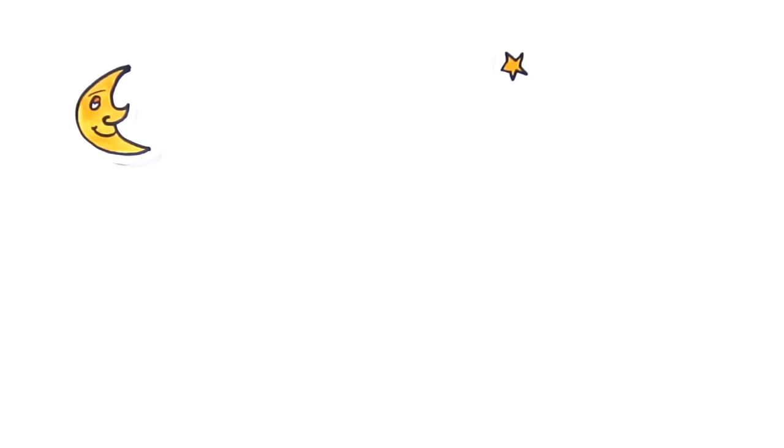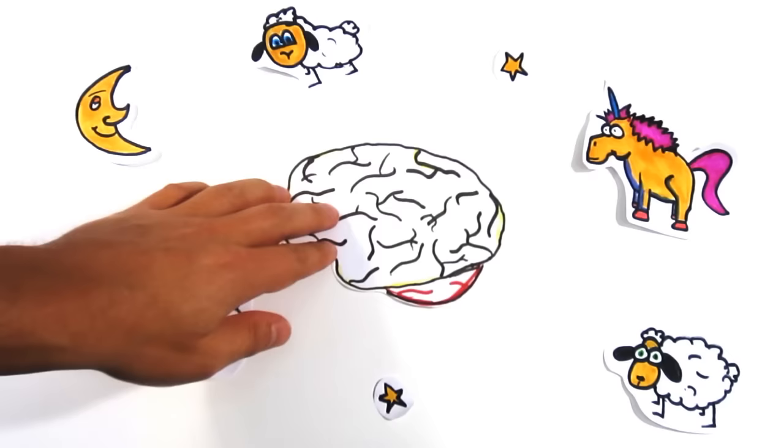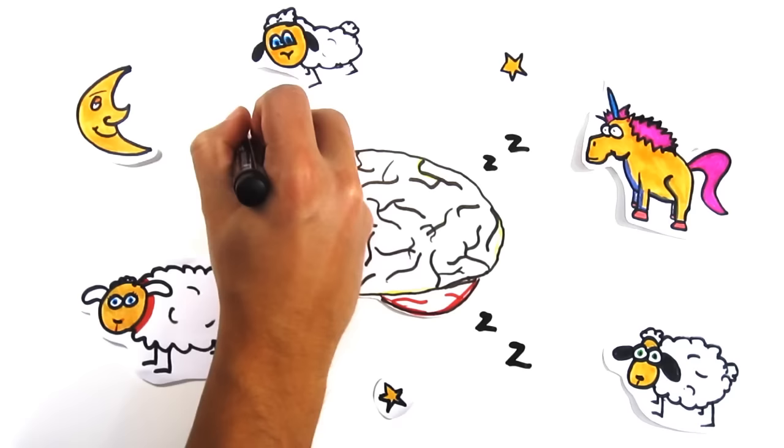After all, dreaming of doing something is almost equivalent to actually doing it, when looking at the functional system of neuronal activity in your brain. So, are you sure you're not dreaming?